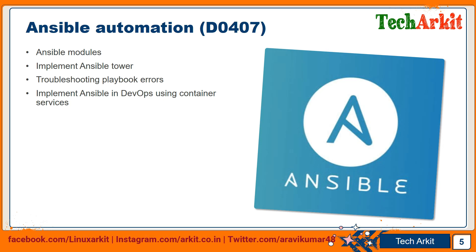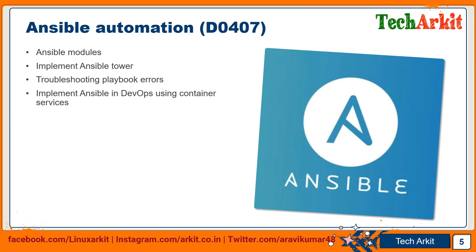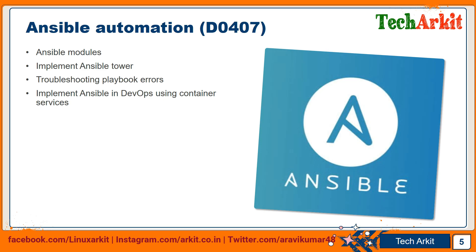You'll learn important Ansible modules — which module works for what purpose — then the installation and configuration of Ansible Tower. The course also covers troubleshooting playbook errors using tags and other methods to identify where a playbook went wrong. Finally, it covers implementing Ansible in DevOps using container services — deploying containers or running EC2 instances on AWS using Ansible. These are all the topics in the Ansible Automation course.